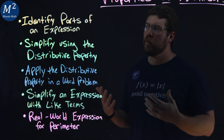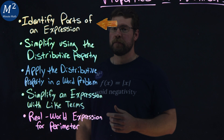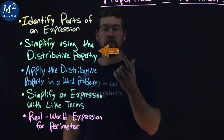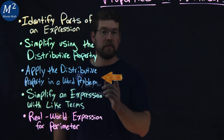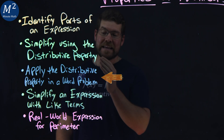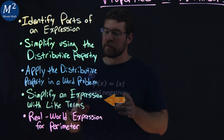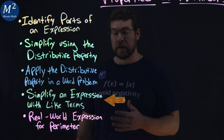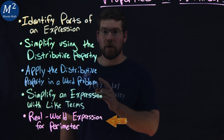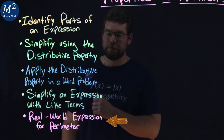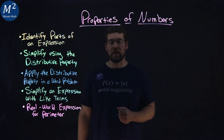In this video, we're going to be identifying parts of an expression. We're going to simplify using the distributive property. We're going to apply the distributive property in a real-world problem. We're simplifying an expression with like terms, and lastly, we'll have a real-world expression for perimeter. So when you're ready, let's get started.